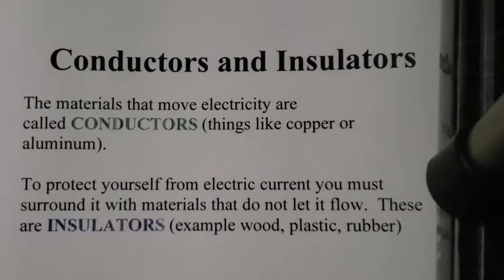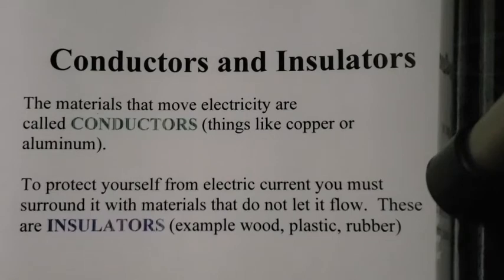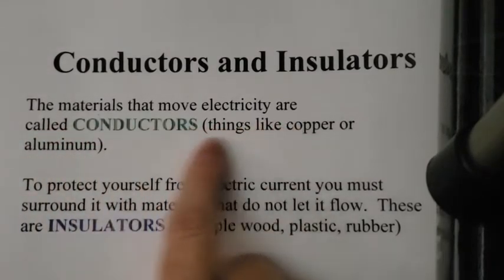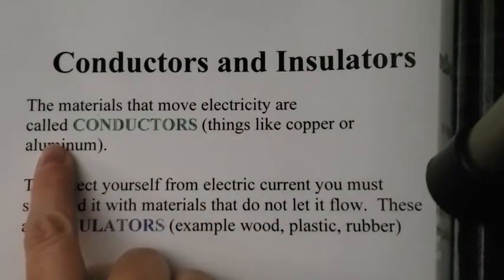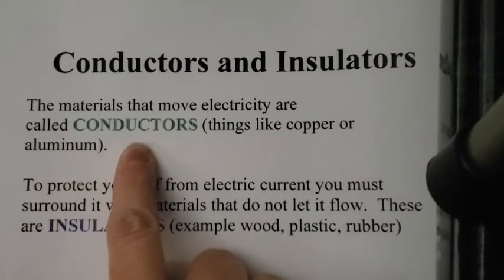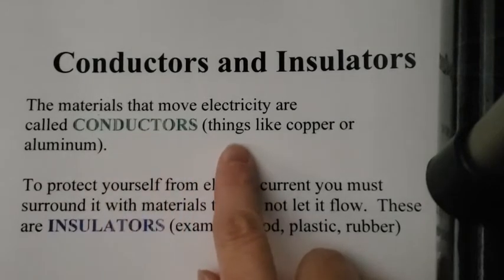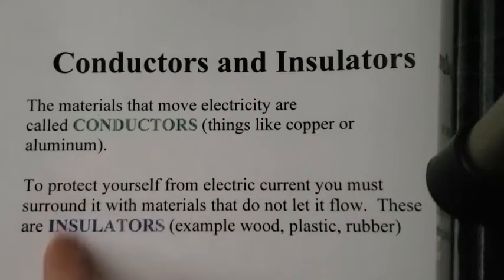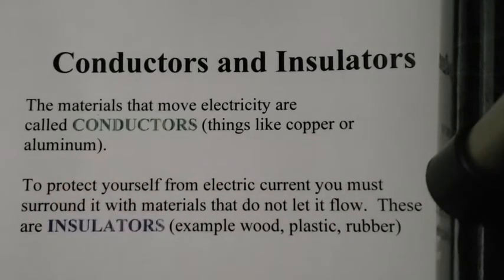Conductors and insulators. There are two types of materials: conductors and insulators. Materials that allow electricity to flow through them easily are called conductors, and these are things like copper or aluminum. Your metals are very good conductors of electricity.